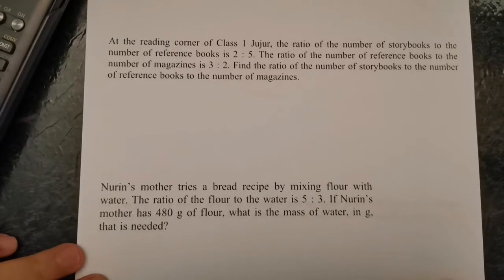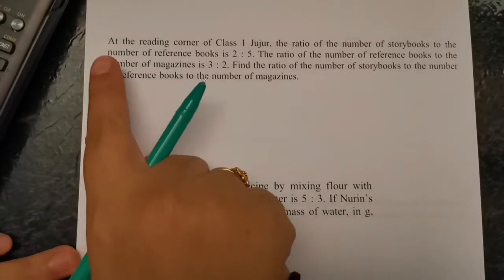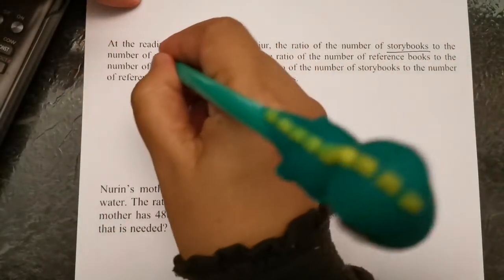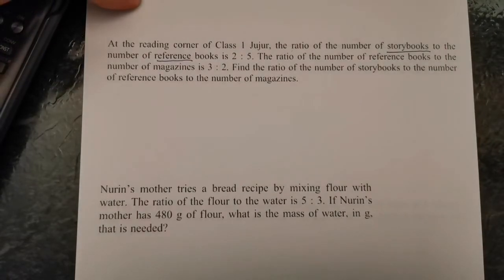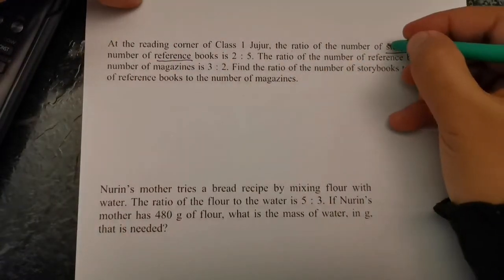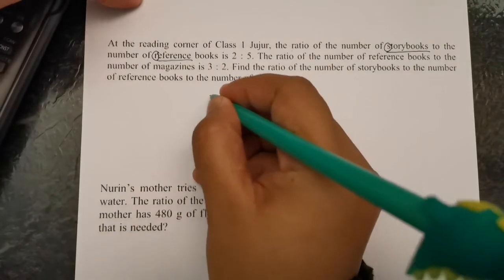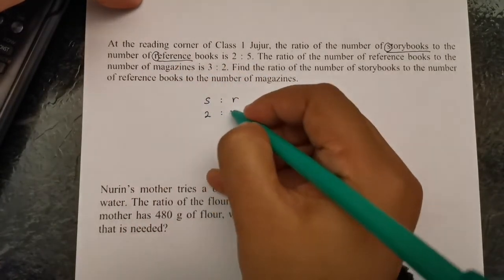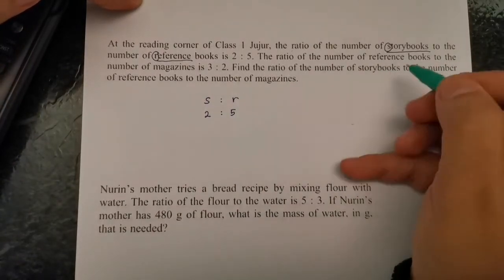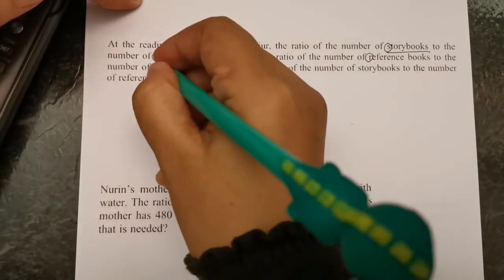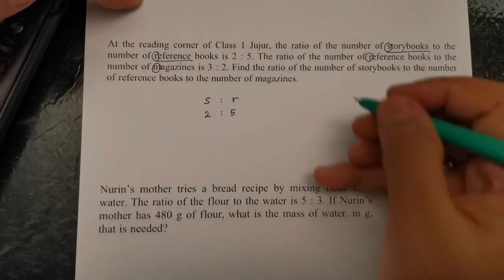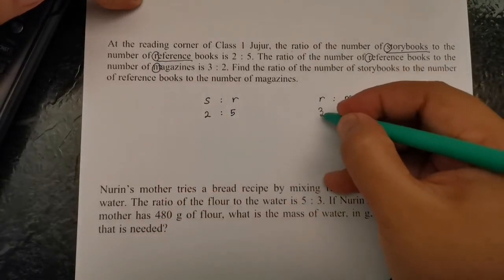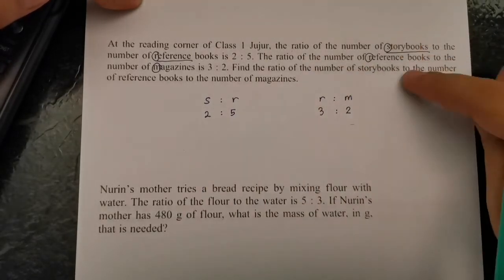Next problem has some word problem solving. At the reading corner of Class 1 Jujur, the ratio of number of storybooks to reference books - I suggest you choose easy letters, S for storybooks, R for reference. So storybook to reference is 2:5. The ratio of reference books to magazines - reference is 3, magazine is 2.